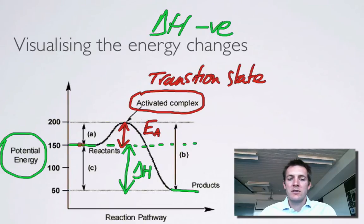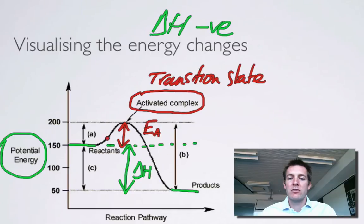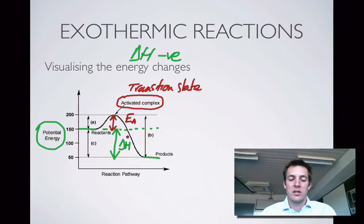In green on the diagram you've got the levels you would have seen on a standard energy level diagram, including the enthalpy change. All we've added is what happens to the energy as we proceed through the reaction — going through the transition state or high-energy activated complex. The difference in height between the reactants and the top of the hump, the energy we have to put in, is called the activation energy.